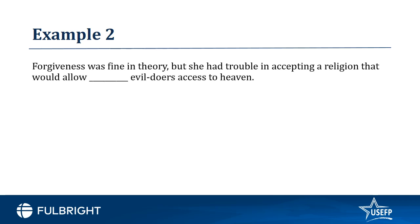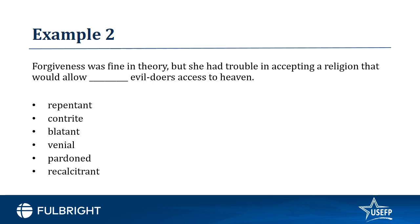Let's look at example number two. 'Forgiveness was fine in theory, but she had trouble accepting a religion that would allow blank evildoers access to heaven.' We've previously learned that the word 'but' signifies a contradiction in the sentence — we should expect a part of the sentence to go against another part. From the passage we conclude that although she was in favor of forgiveness, she still thought that evildoers should go to hell. We have to look for two words that describe these evildoers such that when put in the blank, they create two sentences that mean the same thing. The answer choices are: repentant, contrite, blatant, venial, pardoned, and recalcitrant.